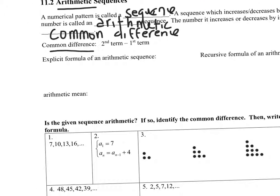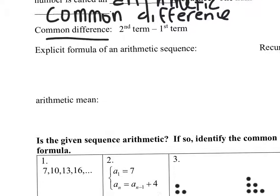When we talk about arithmetic sequences, we have an explicit formula and a recursive formula. The explicit formula is a sub n equals a sub 1 plus (n minus 1) times d. The subscript n means the nth term, a sub 1 is the first term, and d stands for the common difference.